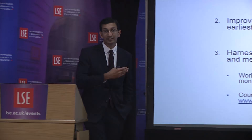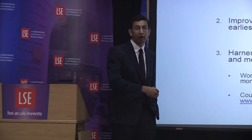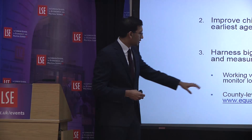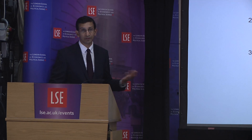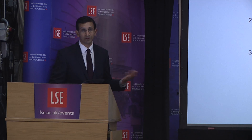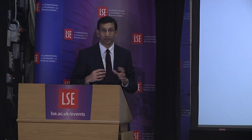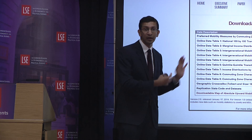Third, harnessing big data or administrative data to evaluate policies scientifically and measure local progress can be extremely valuable. In the U.S., we're working with government agencies to create a system to monitor local trends in inequality and opportunity, having the IRS systematically produce statistics so that local communities can monitor how they're doing and see which policies work. We've also made all the data publicly available at equalityofopportunity.org, where you can download statistics on rates of upward mobility by county and commuting zone.